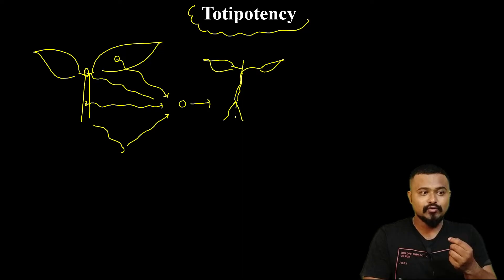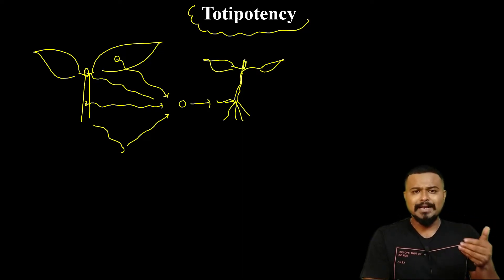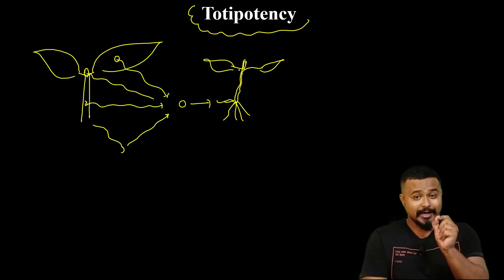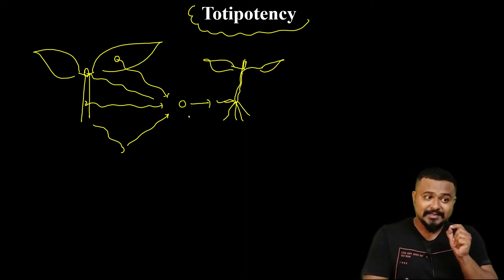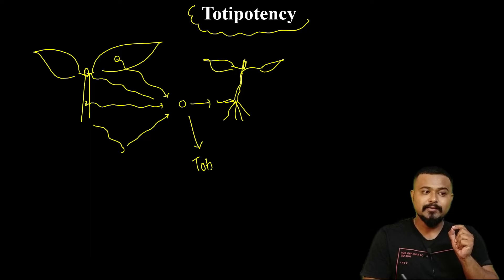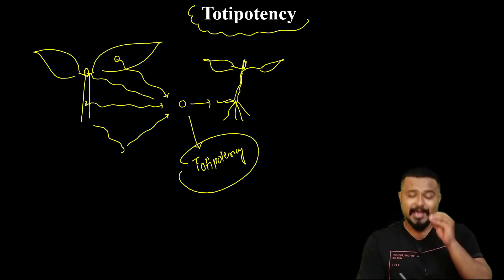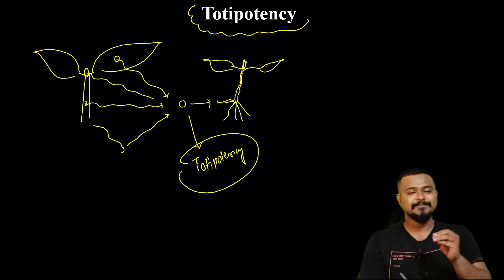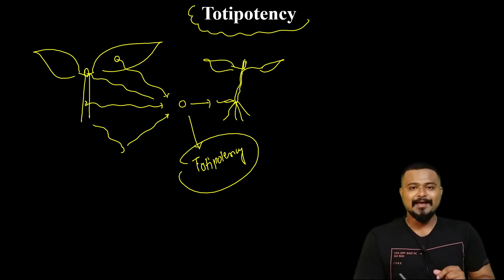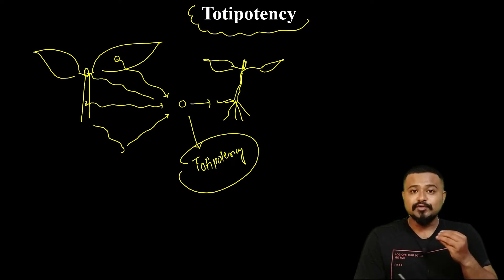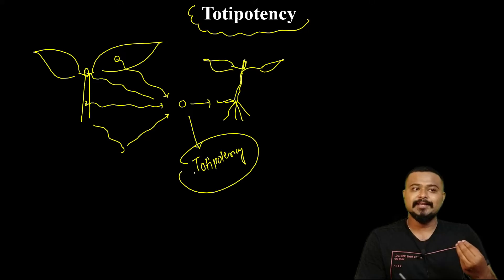This plant will develop from a single cell. This is called totipotency — the capacity and potential of a cell to develop into a complete plant. This property is used in plant tissue culture technique.